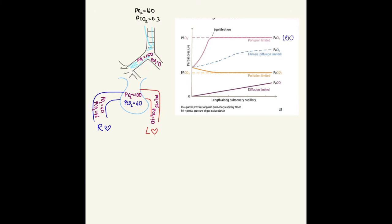In perfusion limited, initially deoxygenated blood comes to the alveoli. Because of the huge difference in partial pressure, all the oxygen moves from the alveoli into the pulmonary capillary through diffusion.